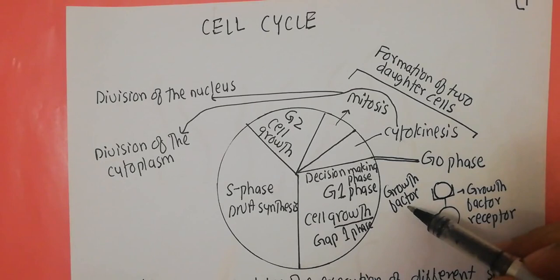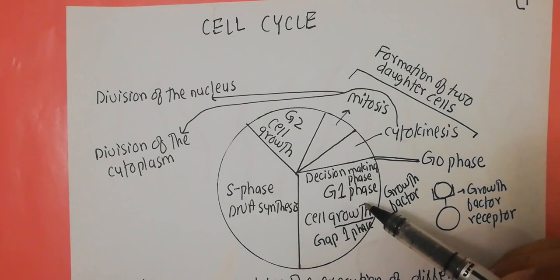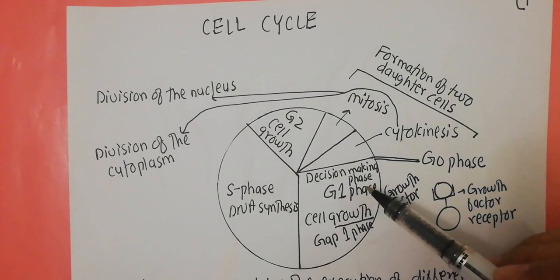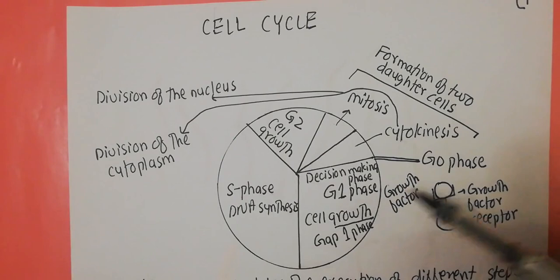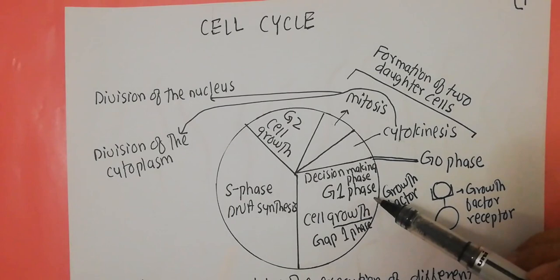When growth factors bind to their growth factor receptors, it is usually a signal for the cell to go for cell division. This binding of growth factors to receptors happens during the G1 phase of the cell cycle. Therefore we can call G1 the decision-making phase, because one of the most important requirements for cell division — the availability of growth factors — is checked during this phase.